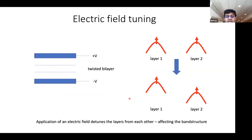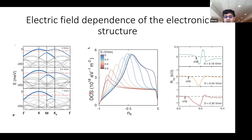Something very nice about this system is that you can use the electric field degree of freedom to actually tune the band structure. As I apply the electric field, electrons present in both layers are initially degenerate at the top of the valence band. Once I apply the electric field, there's an on-site potential energy difference between layers, and this tunes the band structure. Theory shows that as you apply different values of electric field, you can tune the density of states and bandwidth. We also confirmed this experimentally.